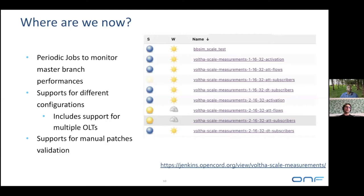That's very important because if you can pinpoint a performance decrease to a specific commit, it is generally fairly easy to solve that issue. If you only run these performance tests before a release every four months, it becomes very, very hard to pinpoint what caused the performance regression.